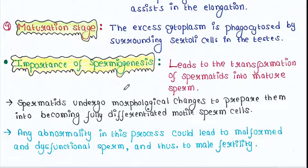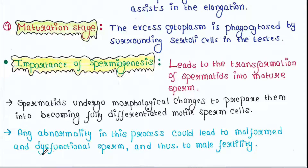So what is the importance of spermiogenesis? Spermiogenesis leads to the transformation of spermatids into mature sperm. Spermatids undergo morphological changes to prepare them into becoming fully differentiated motile sperm cells. Any abnormality in this process could lead to malformed and dysfunctional sperm and thus to male infertility.